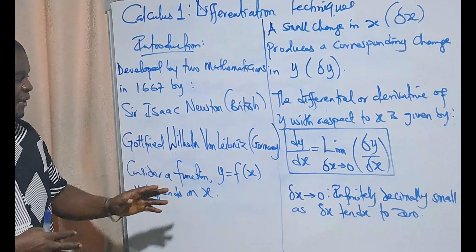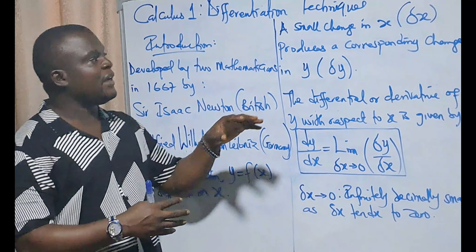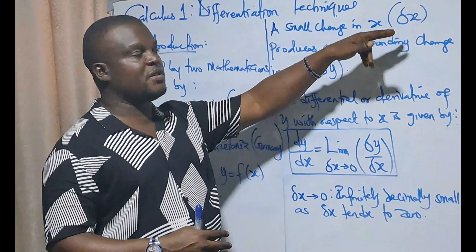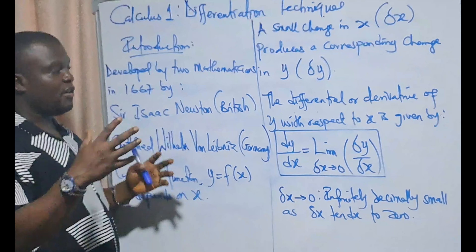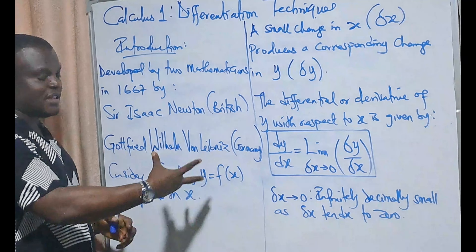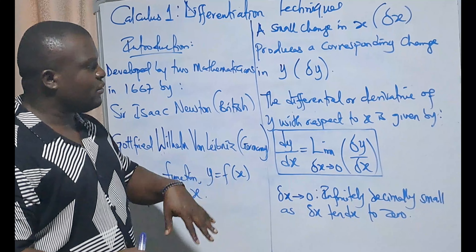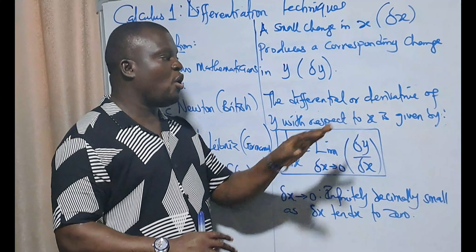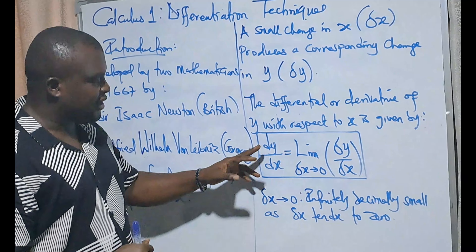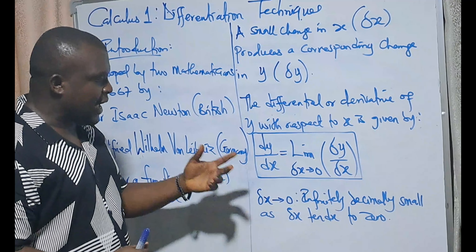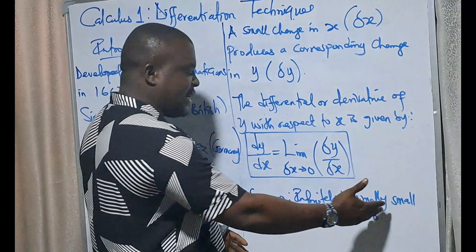Now let's consider a function y as a function of x. This means that y depends on x — that is, if x changes, y is going to change. A small change in x, which is dx, produces a corresponding change in y, which is dy. The derivative of y with respect to x is given as dy/dx, defined as the limit as dx tends to zero — that is, an infinitesimally small change.